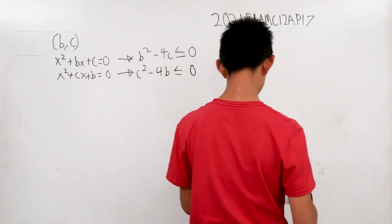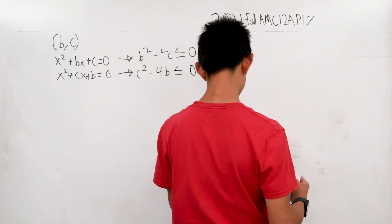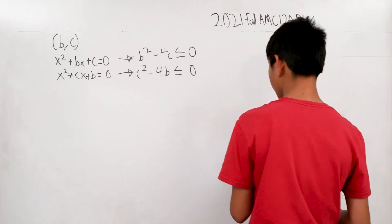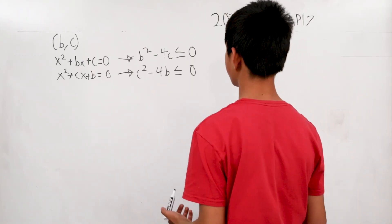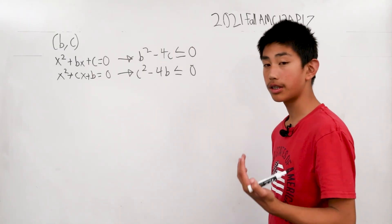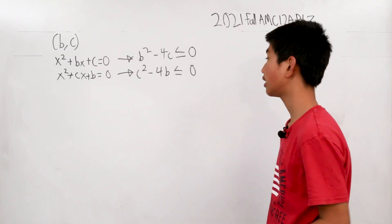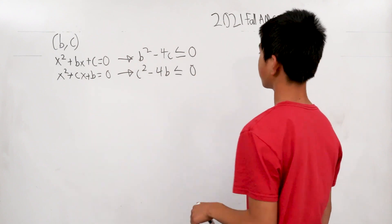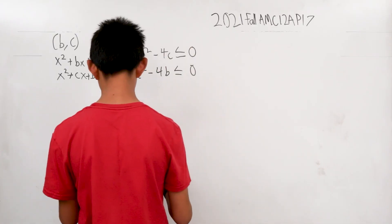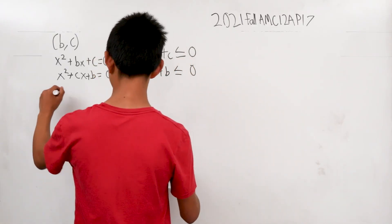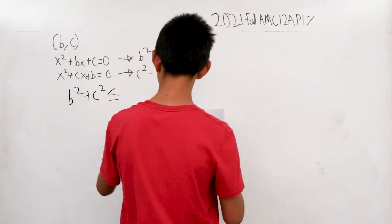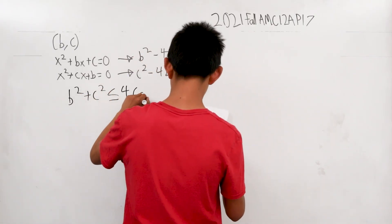This is a particularly weird case, as both of these are equal to zero. But if you add these two cases together, it's still going to be zero. Then you move these terms to the other side. Now we're getting somewhere: b² + c² ≤ 4(c + b).